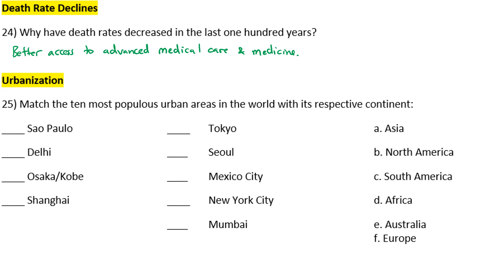Number twenty-five: matching the 10 most populous urban areas with their respective continents — São Paulo, Delhi, Osaka, Shanghai, Tokyo, Seoul, Mexico City, New York City, Mumbai.